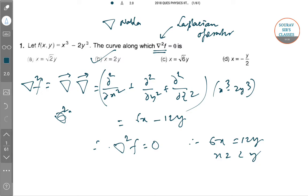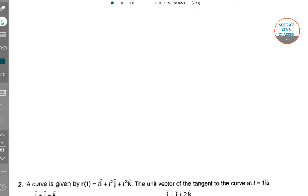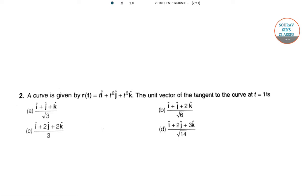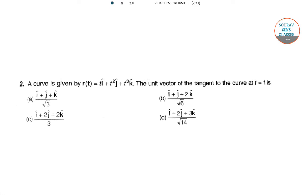Next, let's move to the next question. This time a curve is given: r(t) equals t·i plus t²·j plus t³·k. We need to find the unit vector of the tangent to the curve.